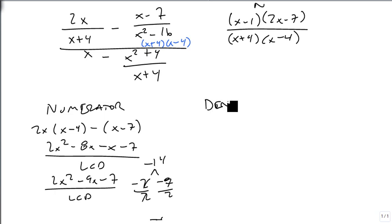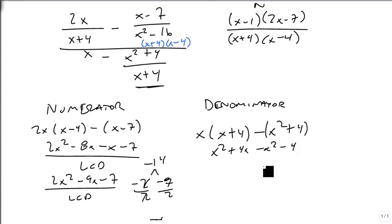Our denominator takes a little bit more work and a little bit less work all at the same time. It's going to give us x times x plus 4, because that is our LCD, minus x squared plus 4. So we get x squared plus 4x minus x squared minus 4, all over x plus 4.